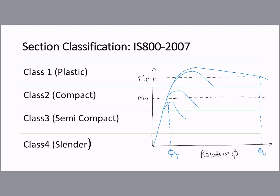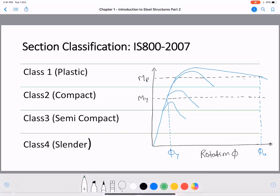For a plastic section, a full plastic moment Mp will be developed. If you start bending a beam, it will form a plastic hinge initially. If you keep bending, the hinge maintains a certain level of strength until a complete failure mechanism is formed. This is called a plastic section.